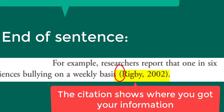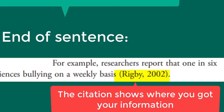This is an open parenthesis, the author's last name, a comma, the year of publication. You close the parenthesis, then you put a period to end the sentence. Note that the period is after the citation, so the citation is considered to be part of the sentence.